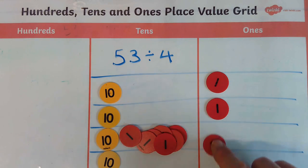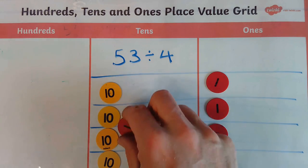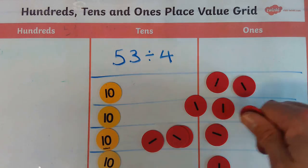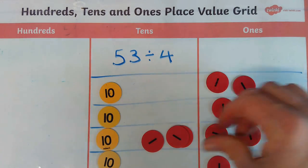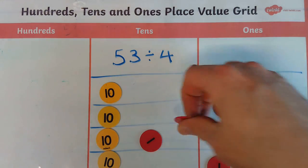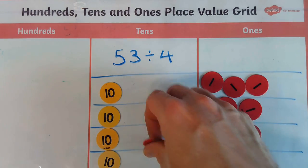So I'm going to go 1, 2, 3, 4. And repeat. 1, 2, 3, 4. And we're going to go 1, 2.